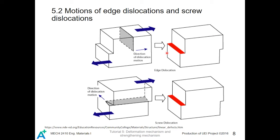Edge dislocations and screw dislocations have different effects in terms of the dislocation slip mechanism. For edge dislocations, the moving direction of the dislocation is parallel to the direction of the applied force, as shown in the first picture — quite straightforward, as also observable from the previous slides. For screw dislocations, it is special: the moving direction of the dislocation motion is perpendicular to the direction of the force, as shown in the second figure.